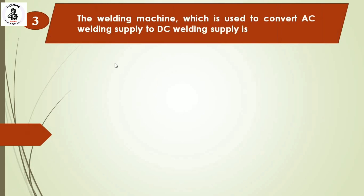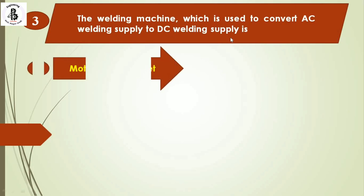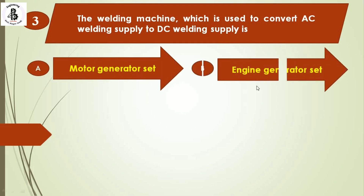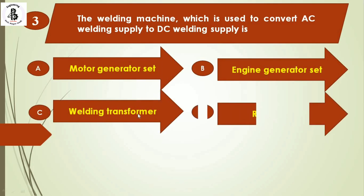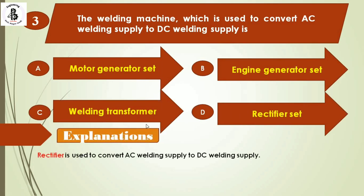The next question: the welding machine which is used to convert AC welding supply to DC welding supply — Option A: water generator set, Option B: engine generator set, Option C: welding transformer, and Option D: rectifier set. A rectifier is used to convert AC welding supply to DC welding supply. The right answer is Option D.